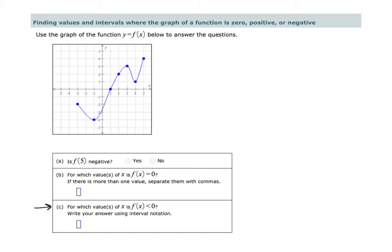Is f of 5 negative? So remember, when you're seeing function notation like this, f of 5, whatever is in the parentheses, that's your input. That's telling you that x is equal to 5. And then it's asking you for the output. So it's asking you to find the corresponding y value when x is equal to 5.